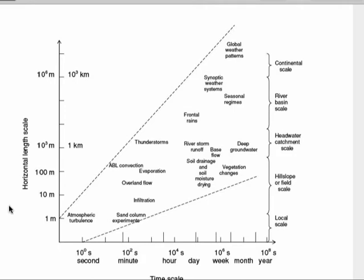At a much more localized scale — the engineering hydrology scale of 10 meters — that corresponds to a grid cell in a gridded hydrologic model. Digital elevation models at 10-meter resolution are common and downloadable. At this hill slope or field scale, relevant processes include infiltration, overland flow, and evaporation, with timescales on the order of minutes to hours.